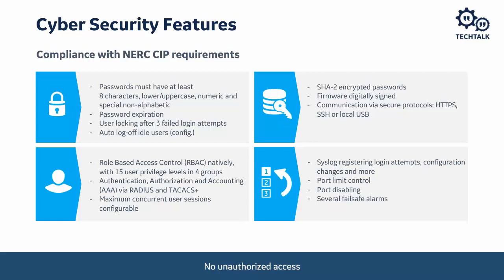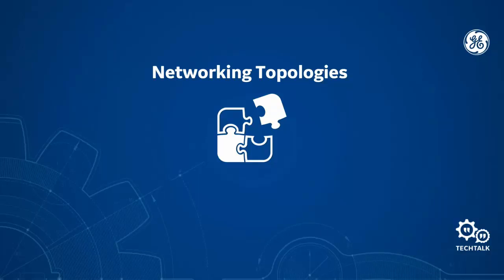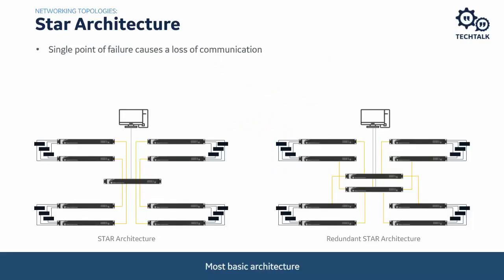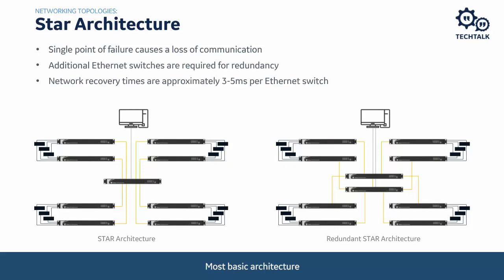When designing an Ethernet network, the basic requirement is to select a topology. There is no one-size-fits-all topology — this will depend on architecture and application requirements. The simplest but least robust is the star architecture, where all devices have a point-to-point connection to the switch and the switch provides the interconnection between devices. The network's weakness is that if one port on the switch is lost, we lose communication to that device, and if we lose the switch, we lose the entire network.